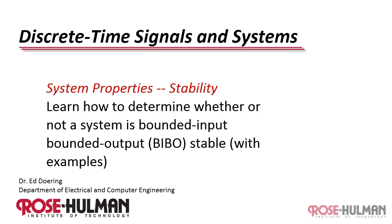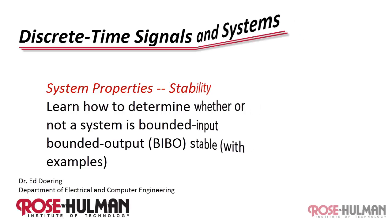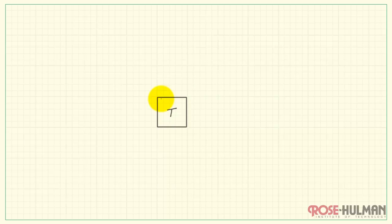Let's consider the system property called stability, and also how to determine whether or not a system is stable. To begin with, let's consider a system T.